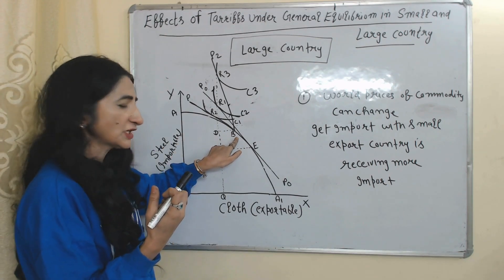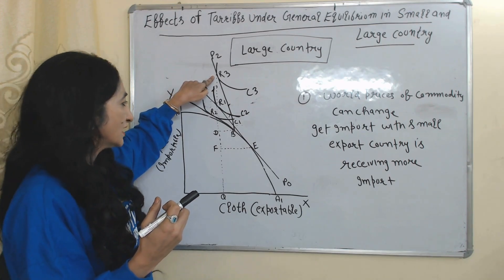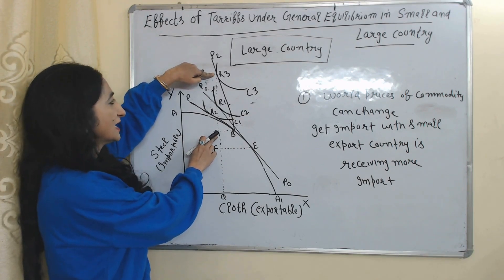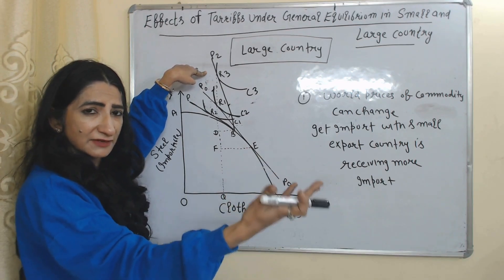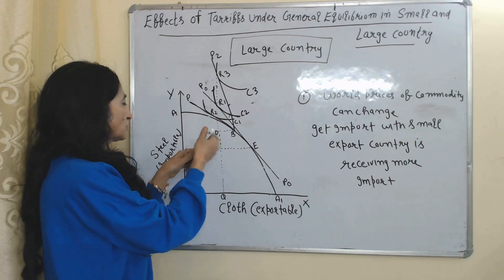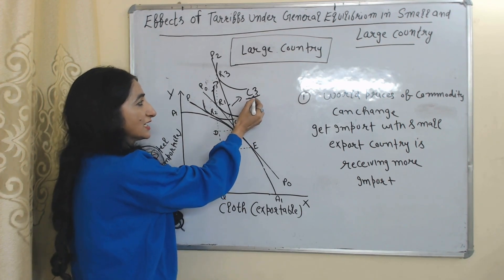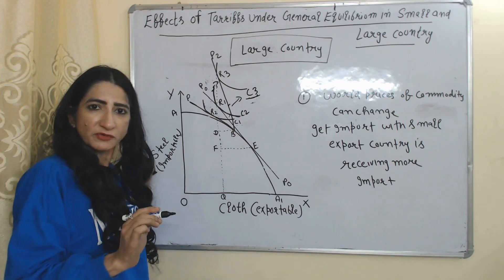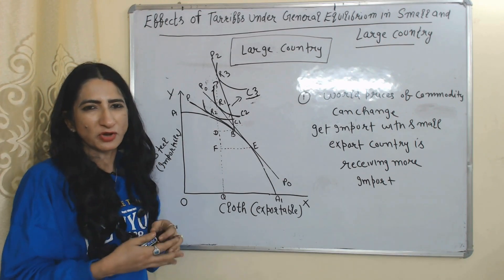After imposition of tariff, the production equilibrium point of the large country is B, but the consumption equilibrium point is R3. The large country is doing exports of DB but in return is receiving imports of R3D. Here you can see the large country is receiving more imports compared to exports, meaning terms of trade has improved. Also, after imposition of tariff the large country has shifted to a higher community indifference curve C3, which shows improvement in welfare. So this is all about the effect of tariff under general equilibrium. Thank you so much for watching. Bye, take care.